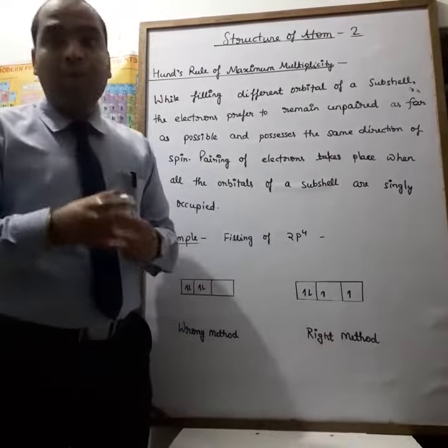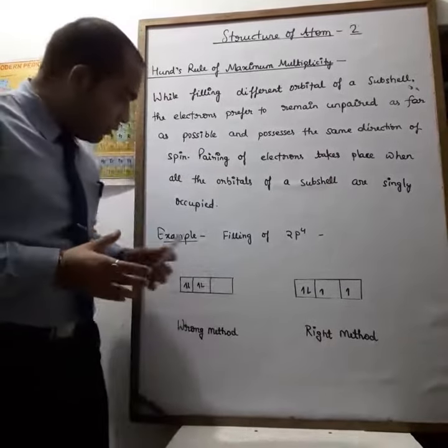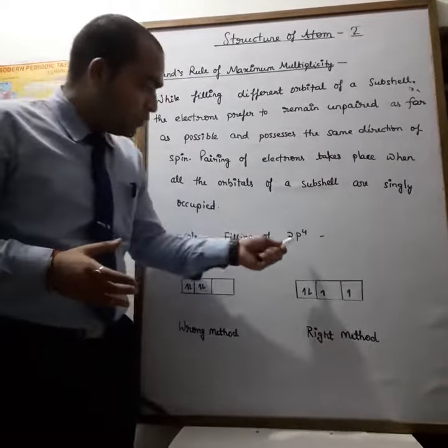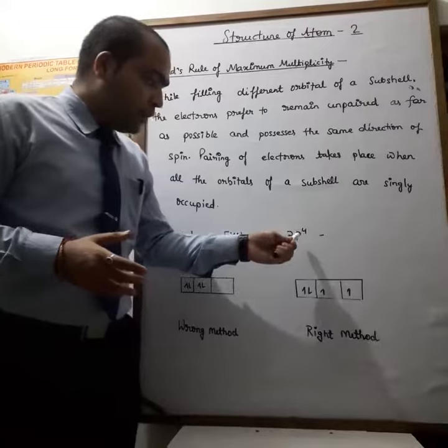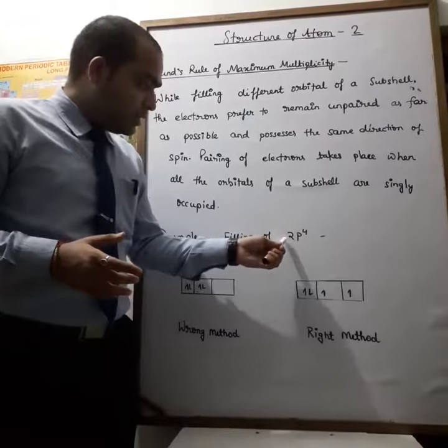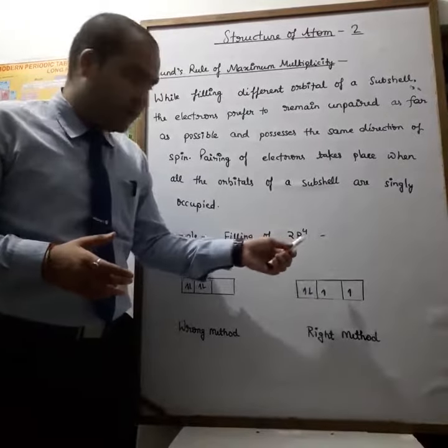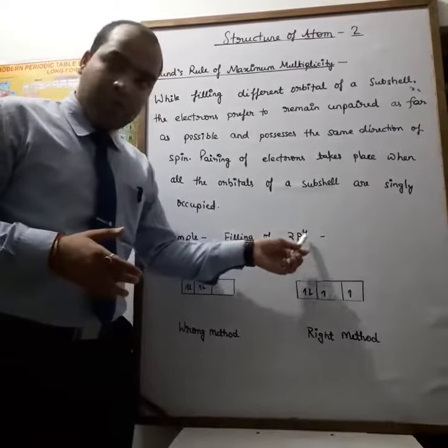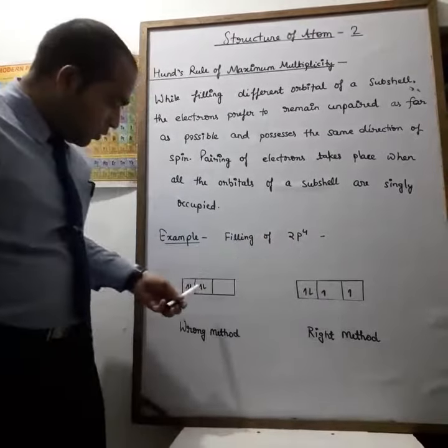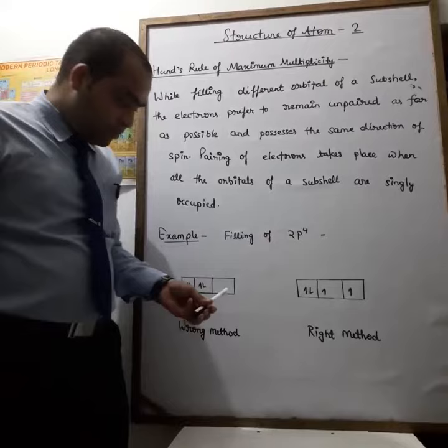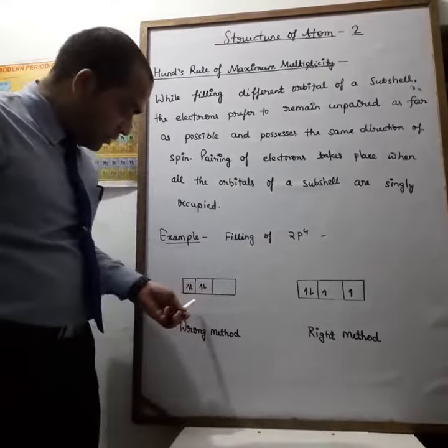For example, we want to fill four electrons in the second P subshell — that is 2P4. Four electrons can be filled in the following manner.